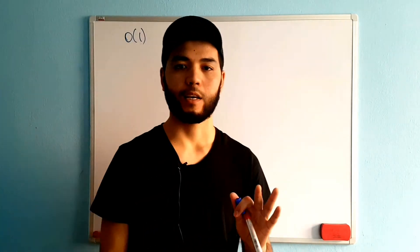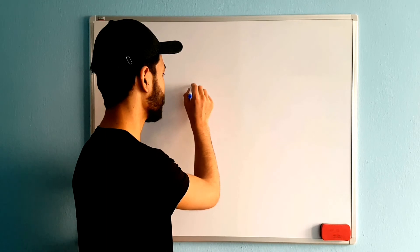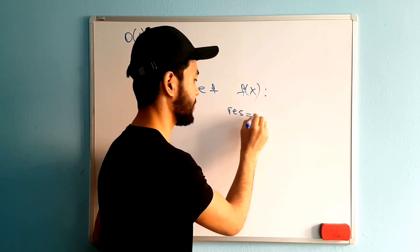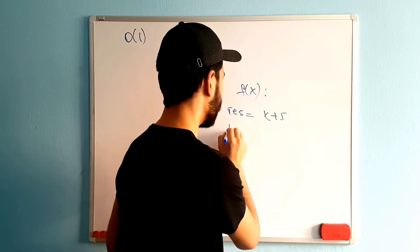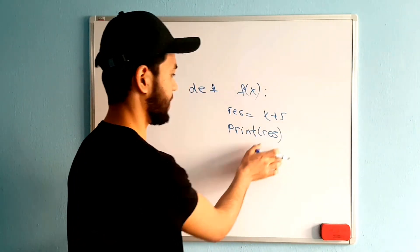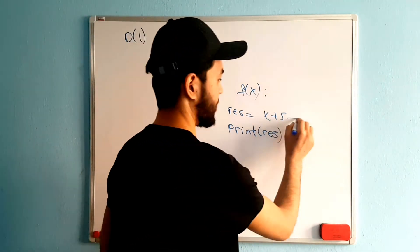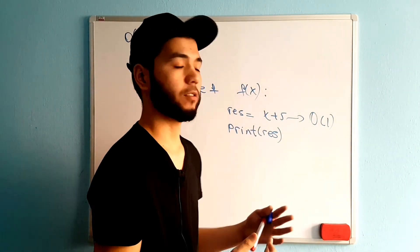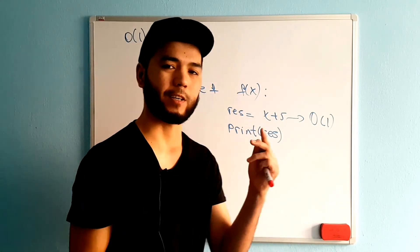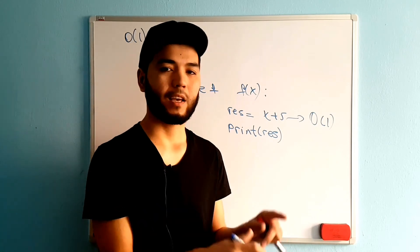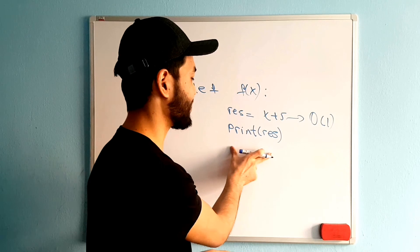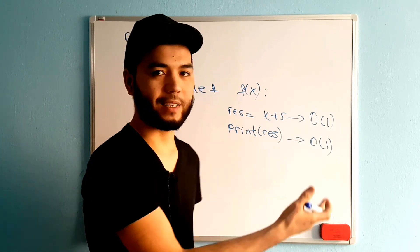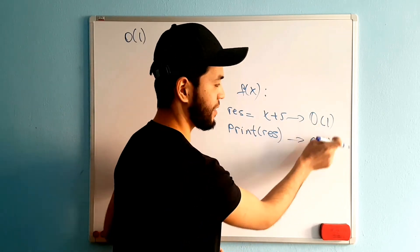The first is O(1), constant time complexity. Imagine I have a function that takes x, and inside I define one variable: res = x + 5, then I print res. This line of code is O(1). Defining a variable, updating numbers, updating or defining booleans — these are all constant time. Printing that variable is also constant time. So the total is O(2), but we drop constants, making it O(1).